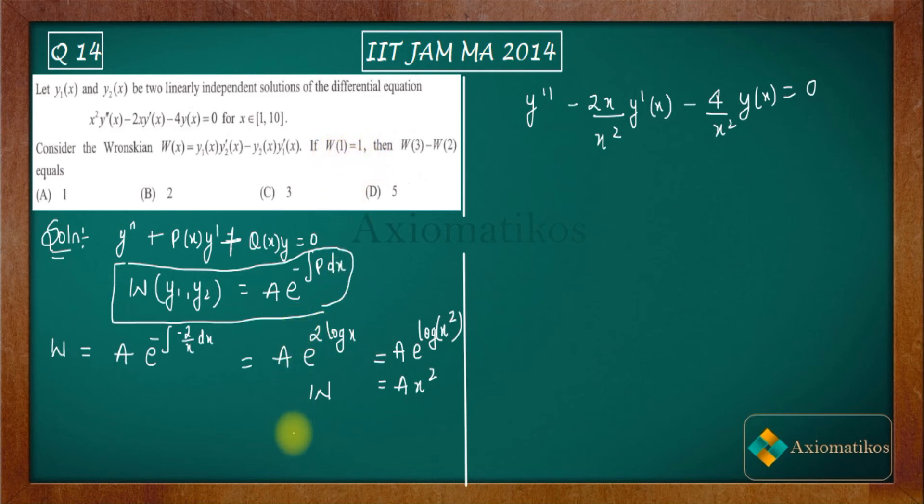That means when you place one inside your function W, which is the Wronskian, you will get 1. So that means your constant A is actually 1. So we got our constant now. So now what will be the W? W will be x². Since A is 1, W will be x². So what will be W(3) minus W(2)? It's 9 minus 4, so that's 5.